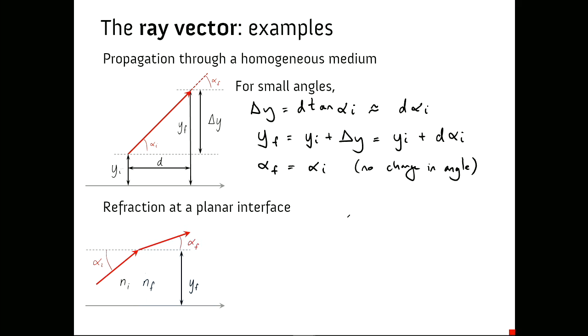The second least simple example, so we're going to build up from the simplest things, is refraction at a planar interface, something we've studied many times before. In this new language of ray vectors with the two numbers, we again want to find the final height and final angle based on the initial height and the initial angle. The height change is easy. It's zero. So we have the final height equals the initial height. Now, the change in angle depends on the refractive indices, of course. So we have to use Snell's law. And that tells us that nf times sine of alpha f is equal to ni sine of alpha i. But again, we're going to make the small angle approximation and write this as nf alpha f is approximately equal to ni alpha i.